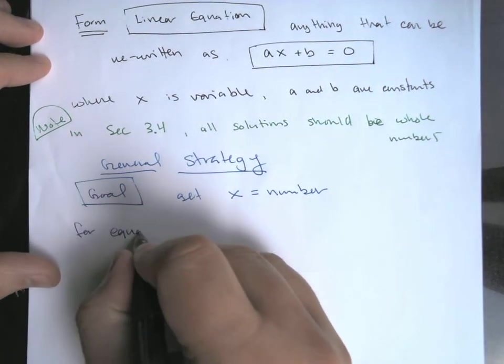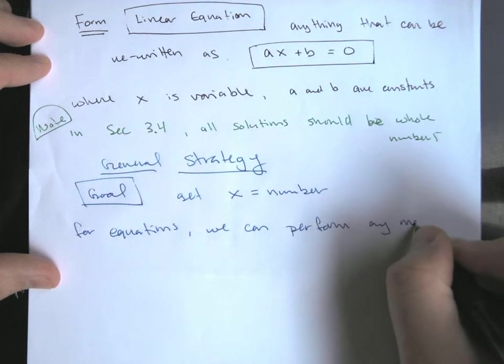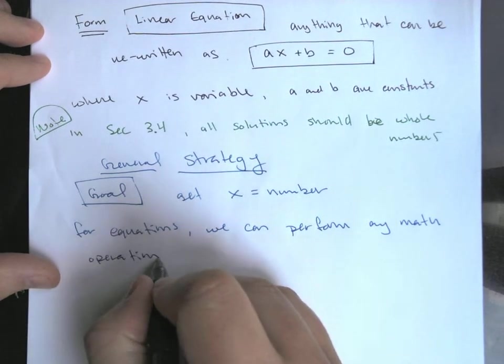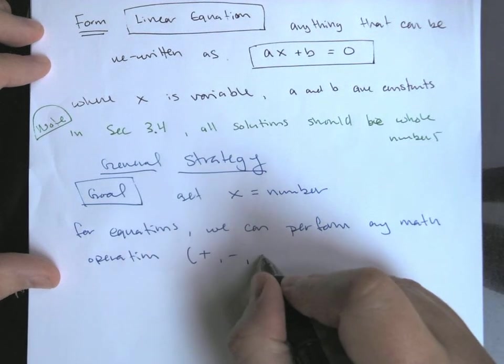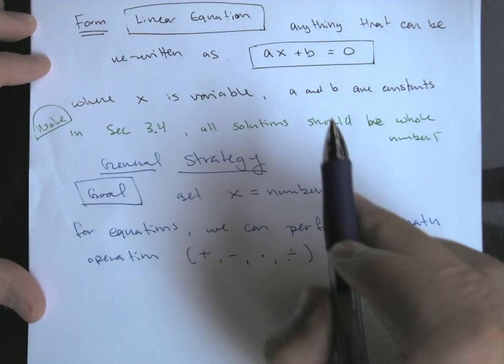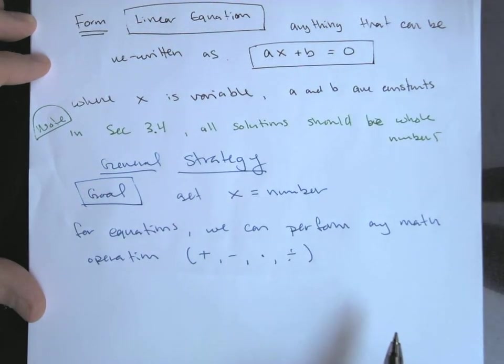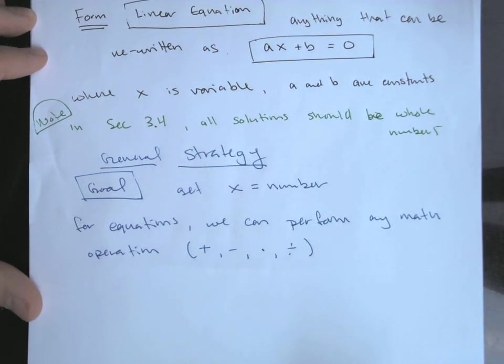So for equations, we can perform any math operation. So for us, that's going to be our kind of big four: plus, minus, times, and divide. Addition, subtraction. Any of those four, in theory you could start to do things like raise it to powers. These are just linear equations, so they don't have powers. Part of what makes this a linear equation is that the x doesn't have an exponent on it. It's just sort of x to the one. So being a linear equation means we're not really going to have to deal with any kind of exponents or roots or anything like that. That would come later. So in this case, for any equation, we can kind of do any kind of math thing. So first, this is going to be plus, times, minus, and divide.